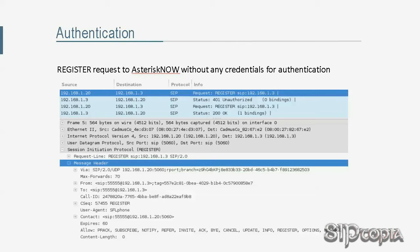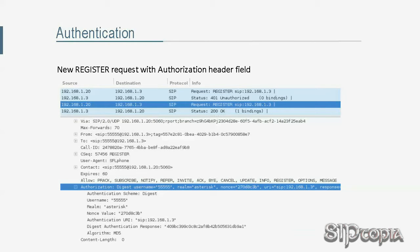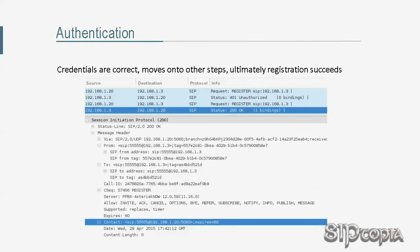Tarzan's SIP phone sends a REGISTER request to the Asterisk PBX without any credentials for authentication. As the Asterisk PBX — in the case of registration, the registrar component — requires the SIP phone to authenticate, it responds with 401 Unauthorized. Please note that the UAS and registrar respond with 401 Unauthorized in these scenarios, whereas SIP proxies respond with 407 Proxy Authentication Required. In both cases, the response includes a WWW-Authenticate header field. Using those parameters, the UAC calculates and adds an Authorization header field to the new REGISTER request. If the credentials are not correct, the registrar will again respond with 401 Unauthorized.